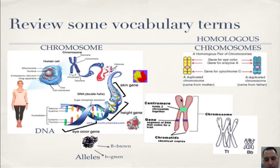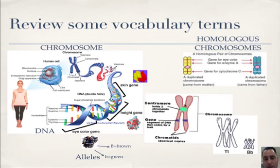A chromosome is made up of two chromatids. You had one DNA molecule, but then it went through replication to make two identical molecules. Those two chromatids are held together by a centromere. Genes are segments that code for a protein — segments of DNA. The chromatids are identical DNA copies.